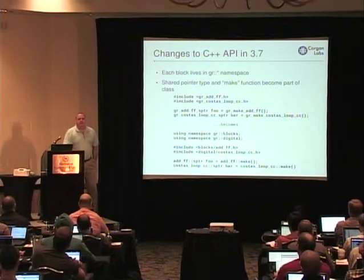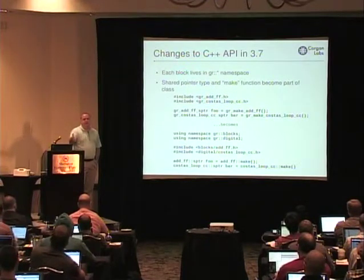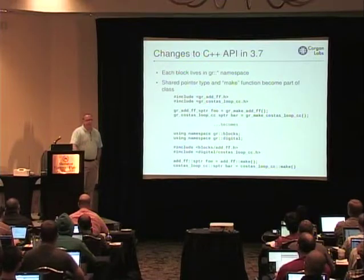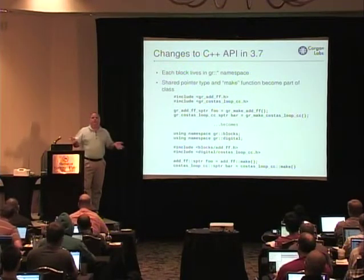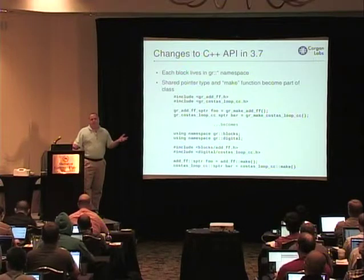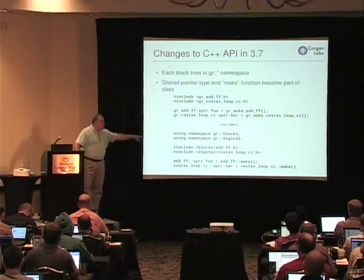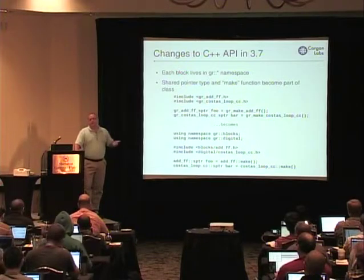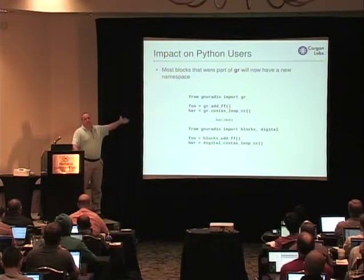The short answer is yes, it does translate to Python. The only thing changing in Python is that some things that used gr.whatever are now blocks.something or digital.something or filter.something. In our Python wrapper via SWIG, when you called gr.add_ff(), underneath it was calling gr_make_add_ff and wrapping the pointer into a Python object. Now a different SWIG helper mechanism calls the static make function and does the same thing with the return pointer. So the syntax in Python actually doesn't change.